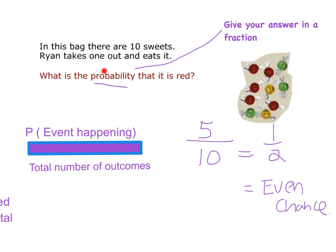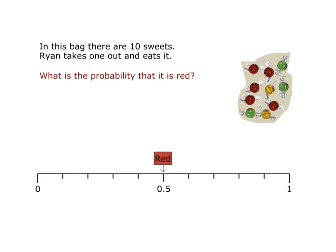So if I'm asked to find the probability of something, I must always give my answer in a fraction. On the bottom I always have the total number of outcomes, and on top I have the probability of the event happening. In this question, what is the probability that it is red? The probability of it being red is 5 out of 10, which simplifies to a half. I've drawn exactly where the probability of red would be on my scale — from 0 to 1 — it was 5 out of 10, or 0.5, or one half.